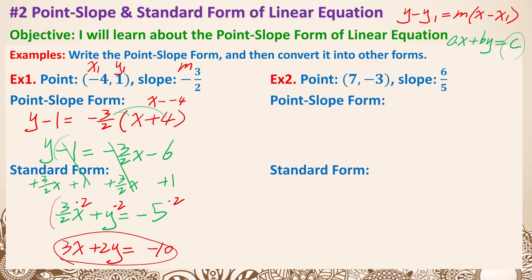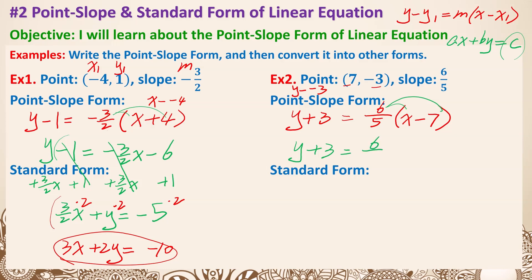That's example 1. Please pause and try example 2. For example 2, the point is (7, negative 3), so the point-slope form is y plus 3 equals 6 fifths times (x minus 7). Distribute: y plus 3 equals 6 fifths x minus 42 over 5.